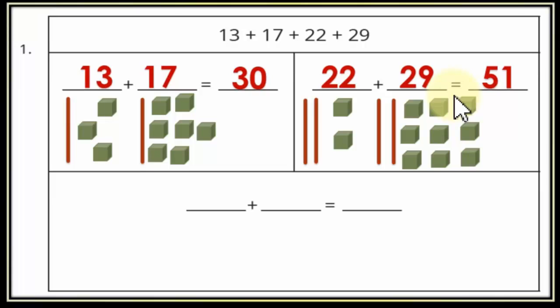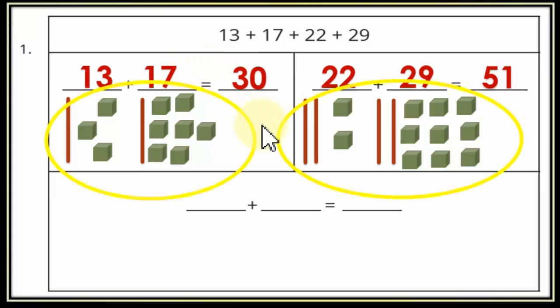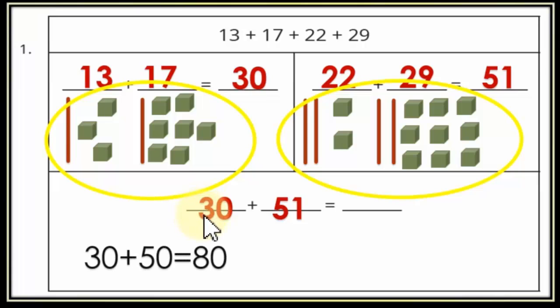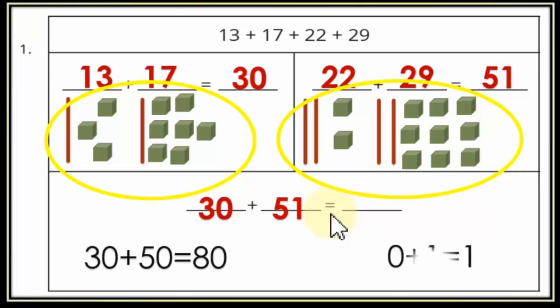أنا كده لسّه مخلصتش المسألة — عندي مجموع عددين ومجموع عددين، لكن عايز المجموع الكلي للأربع أعداد. بقى ناخد 30 و51 ونجمعهم على بعض. 30 فيها 3 in tens، و51 فيها 5 in tens: 30+50 = 80. والـones: 0+1 = 1. يعني 80+1 = 81.